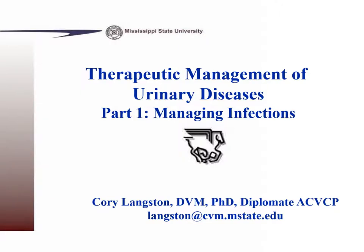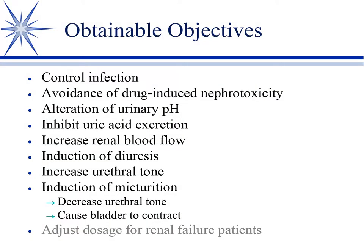We're going to talk about therapeutics involving the urinary system. Topics include UTIs, nephrotoxic drugs and how we minimize risk, how we change urinary pH and when we want to, inhibiting uric acid excretion — important in Dalmatians — increasing renal blood flow primarily in oliguric renal failure, and likewise diuresis, which is applicable to renal disease and many other diseases where we want to dilute patients.